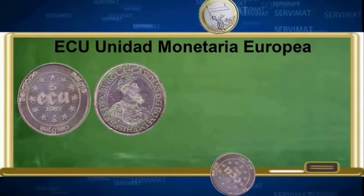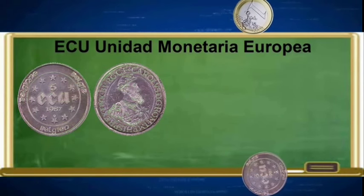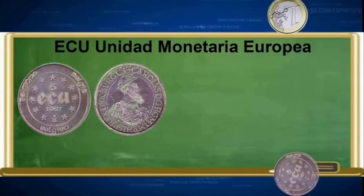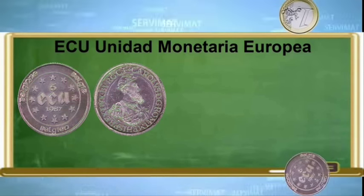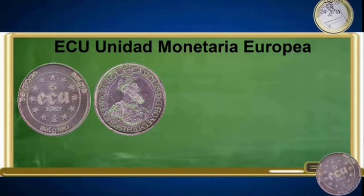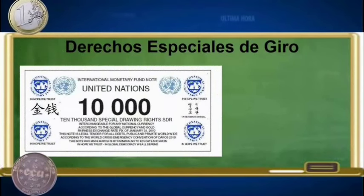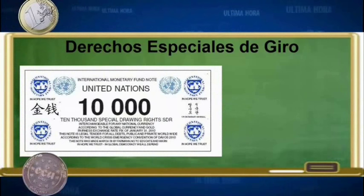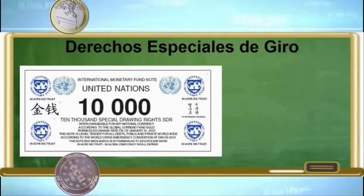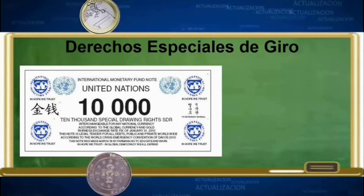El ECU fue emitido por la comunidad europea y sirvió para hacer mucho más fácil la transición entre las monedas nacionales europeas y el euro. Y hoy en día, al Fondo Monetario Internacional se le ha ocurrido crear una moneda intermediaria para poder quitarle todo el poder al dólar. Esta moneda se llama derechos especiales de giro.